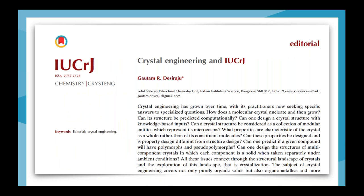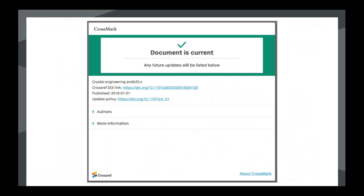If the publisher has added a Crossmark button to their PDFs - as shown here in the top left-hand corner - you can click on that button, and provided you have an internet connection, it will pop up a webpage with the Crossmark box showing the latest status. Most people see a Crossref UI link that always points back to the publisher-maintained copy, and a link to the publisher's policies. In this instance there are no updates, but it does say that any future updates will be listed below.